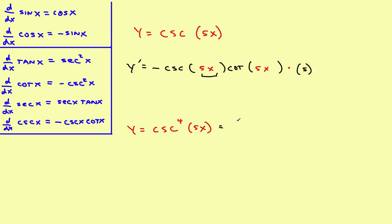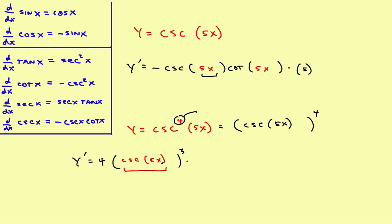Now let's try the cosecant to the fourth. I'm going to rewrite it first by moving the 4 to the outside, making it the cosecant of 5x, the entire thing to the fourth power. The derivative: first you've got something to the fourth power, so it'll be 4 times something cubed — rewrite the inner part, which is the cosecant of 5x — then times the derivative of what's on the inside. The derivative of the cosecant is the negative cosecant cotangent. Replace it with the original inner part, then times the derivative of what's on the inside, which is 5, and you are done.